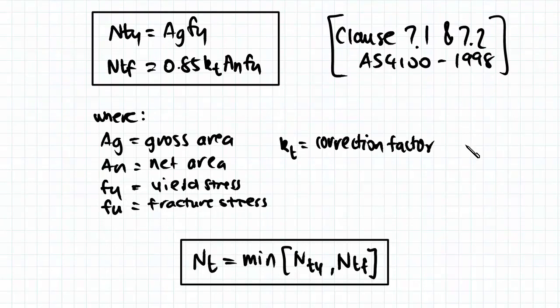Now the section capacity of any steel member in tension will be the minimum of the section capacity when it's yielding and the section capacity when it's fracturing, so whichever one is lower and more likely to occur.